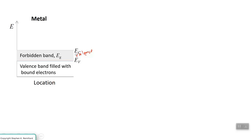E sub G is E conduction minus E valence. If you take the difference between the conduction band edge energy and the valence band edge energy, you have gap energy. And so the conduction band is filled with the electrons that are free to move.